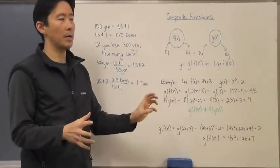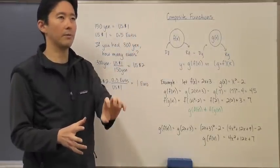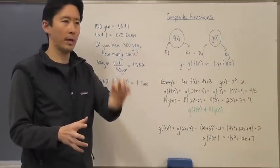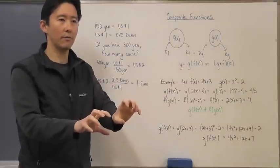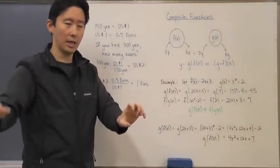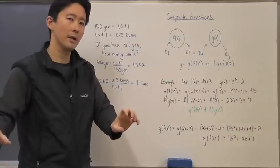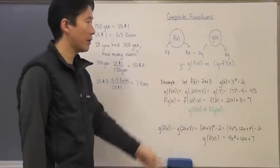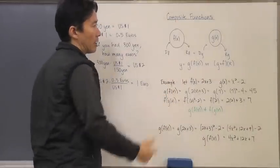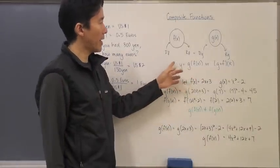If you want to think about it in terms of functions, what's actually happening is that I'm taking a domain element, putting it into a function, coming up with a different range element. But that range element now becomes the domain element of the second function, which is then churning out another final range element. That's what composite functions are.